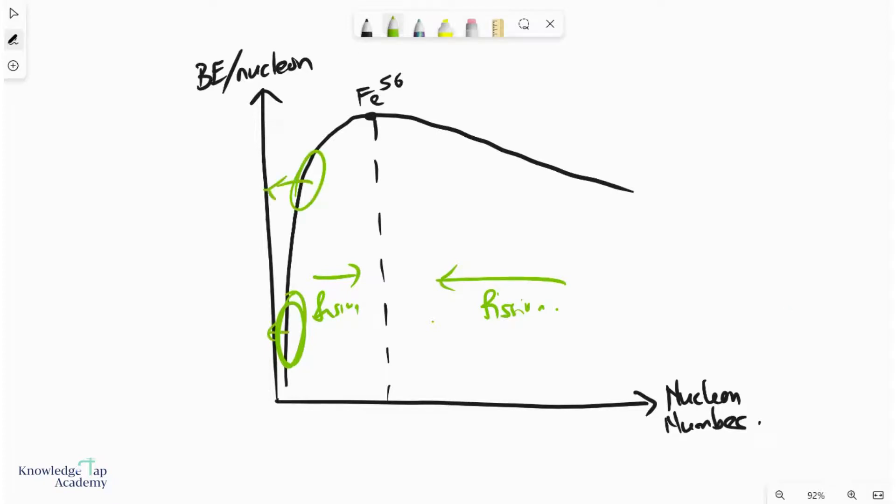Indeed, you want the binding energy per nucleon of the products to always be higher than the binding energy per nucleon of the reactants. Similarly, on the other side, if I do fission, my reactants would be here and my products would be here. And again, you get this same wonderful scenario where the BE of the products is higher than the BE of the reactants.